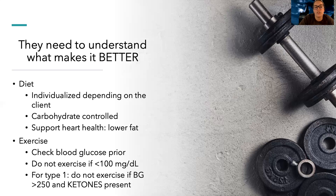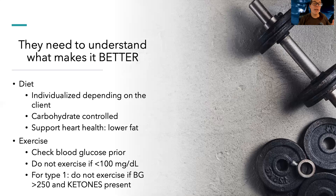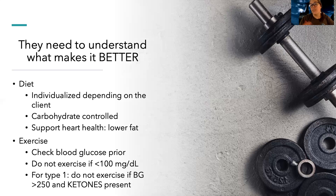Exercise-wise, patients need to check their blood glucose prior to exercising. They should not exercise if their blood glucose is less than 100, because it would be too low to safely exercise — when you exercise, you use your glucose stores, and you could end up with a really bad hypoglycemia. For type one diabetics specifically, they should also not exercise if their blood glucose is greater than 250 and ketones are present. They can do a urine test at home to check for ketones.